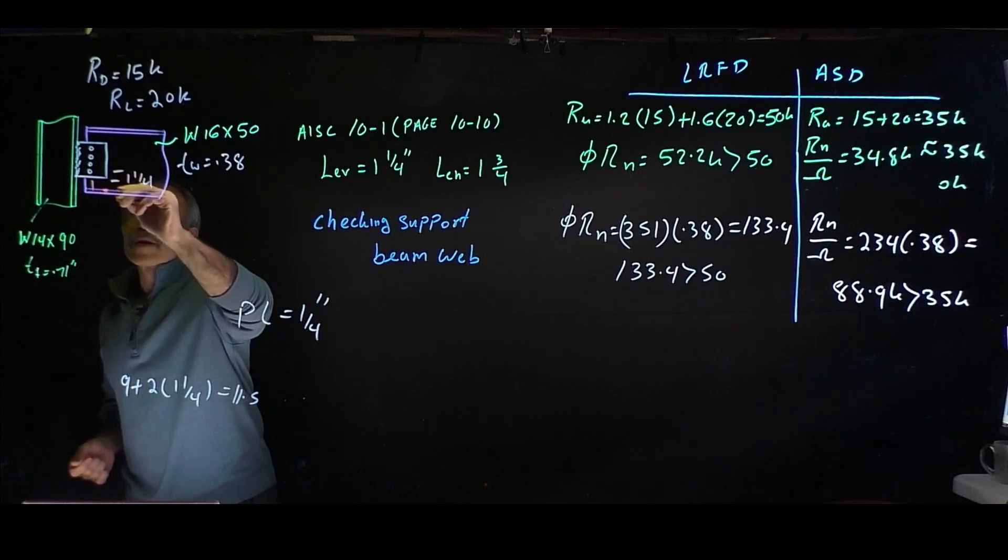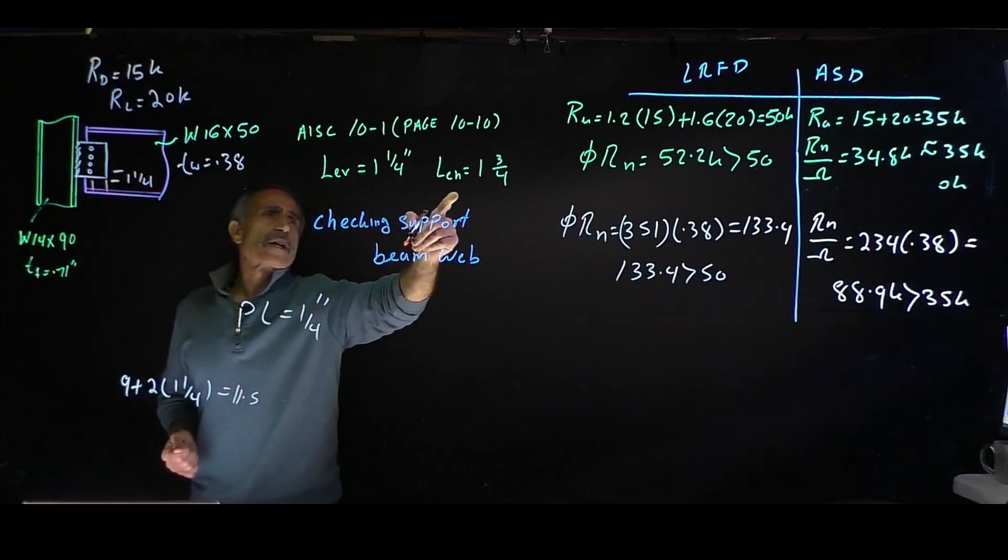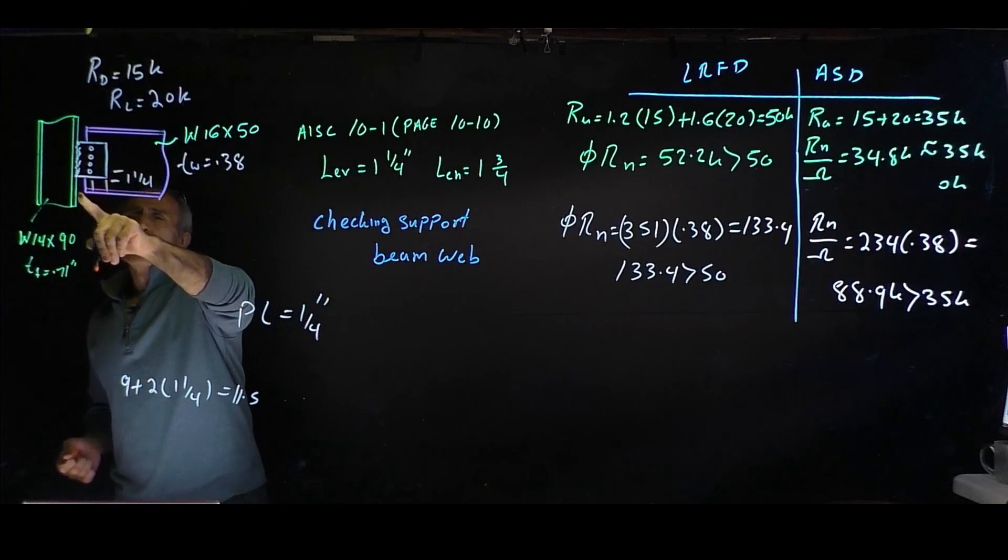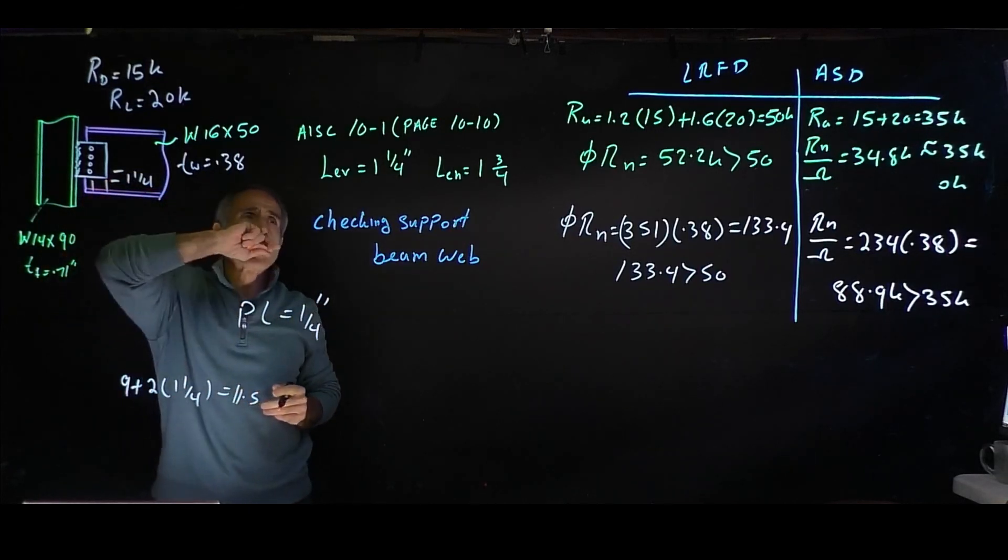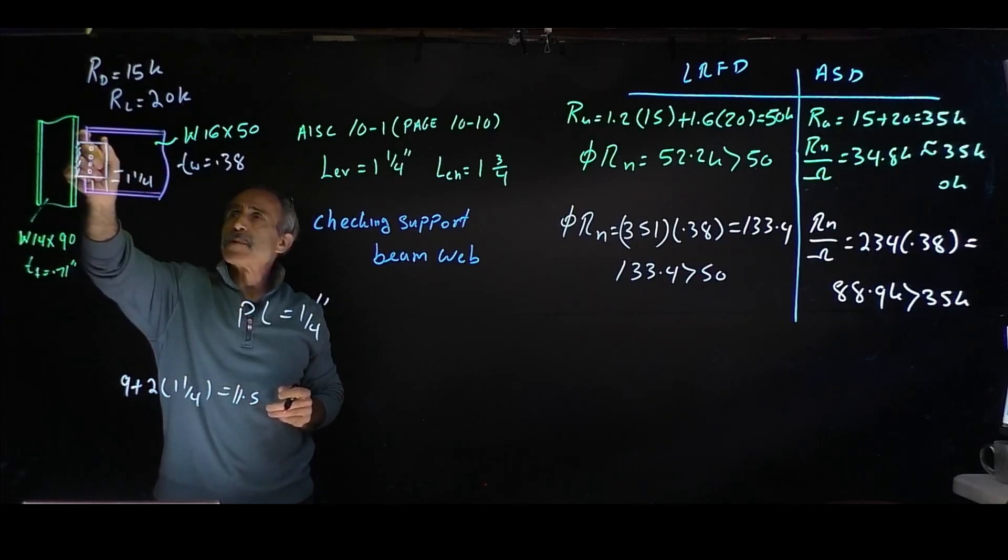And then in here, the horizontal Lev horizontal was 1-3/4 on this side, 1-3/4 on the other side. And that will give you two, three, and you've got this gap here, so five will do.